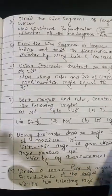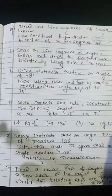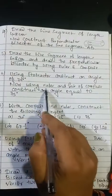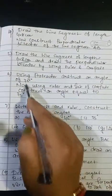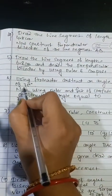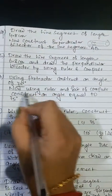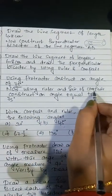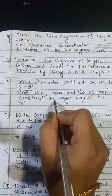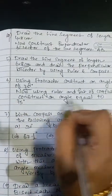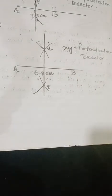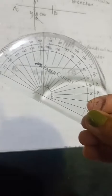Question number 6: Using the protractor, construct an angle of 75 degrees. Also, using the ruler and pair of compass, construct an angle equal to 75 degrees. This is the protractor.